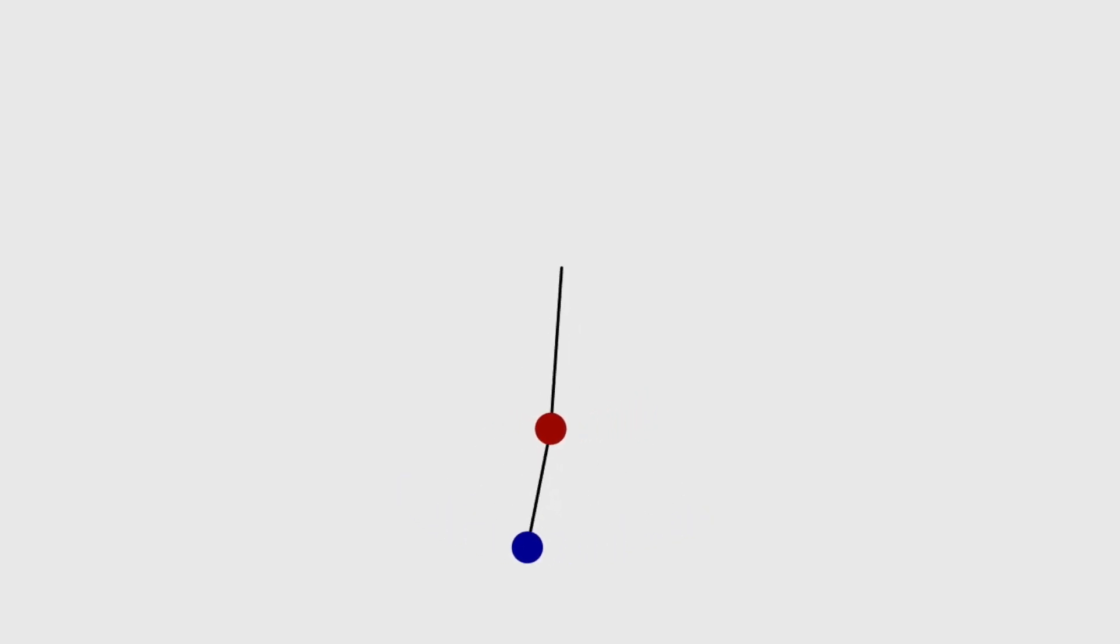A double pendulum. When the angles are small, the motion's very simple, and if you give it a little bit of a nudge, that disturbance stays small.